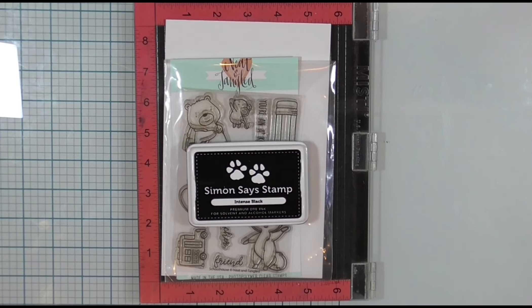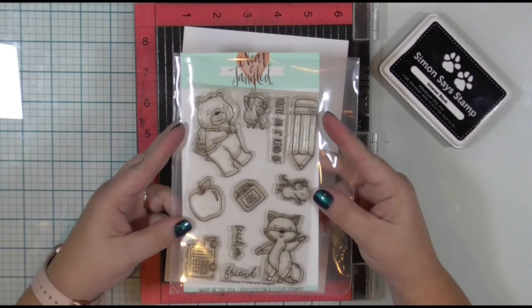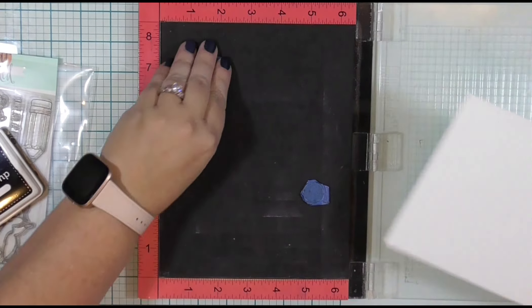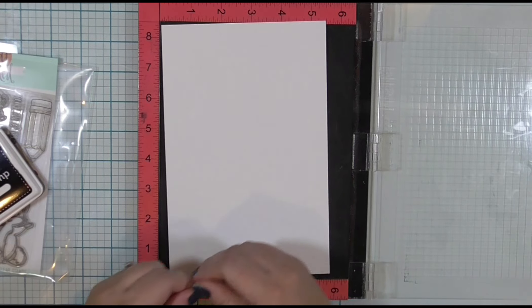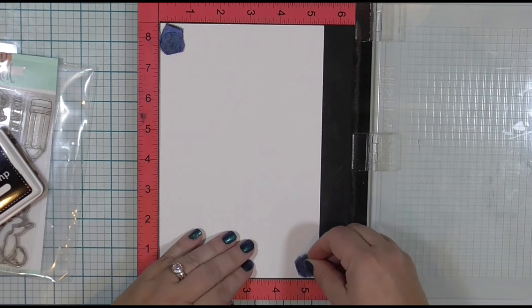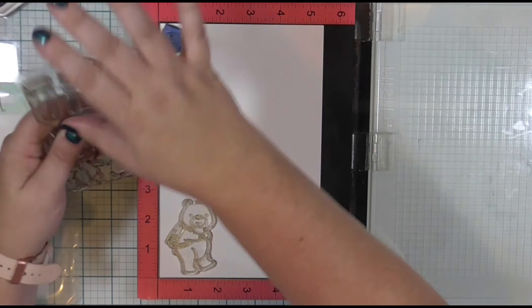This week I have chosen a neat and tangled stamp set called Schoolhouse. I have a couple of school-themed cards I'm trying to make, so I decided to stamp these images out. I have half a sheet of Neenah Classic Crest Solar White cardstock, 80 pound, and I'm going to place the images on my cardstock and pick them up with the MISTI lid.